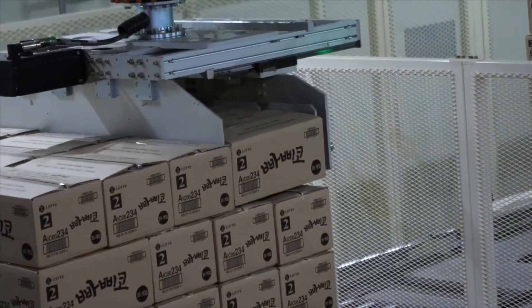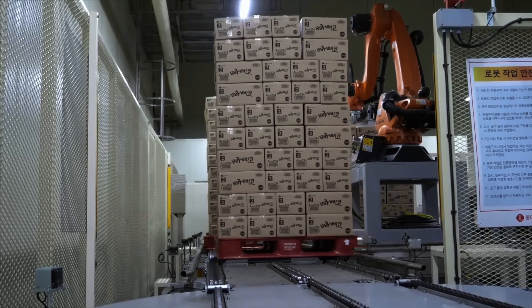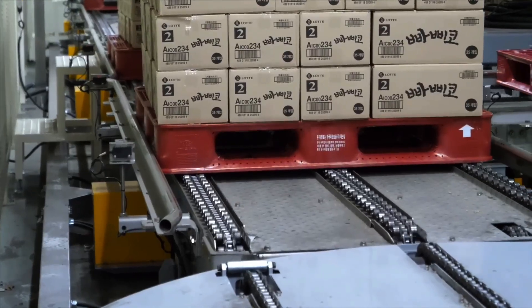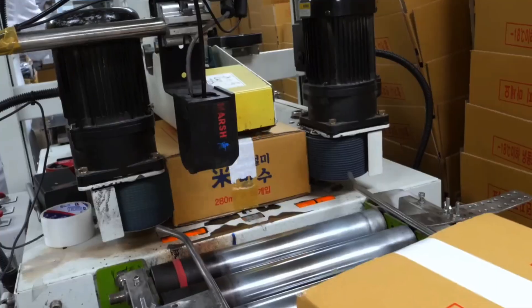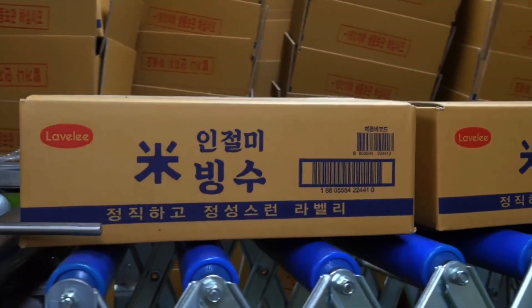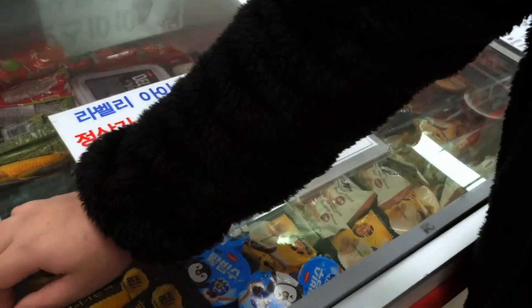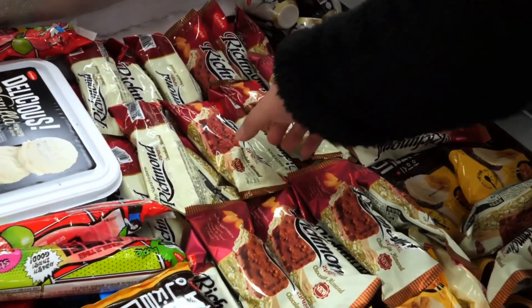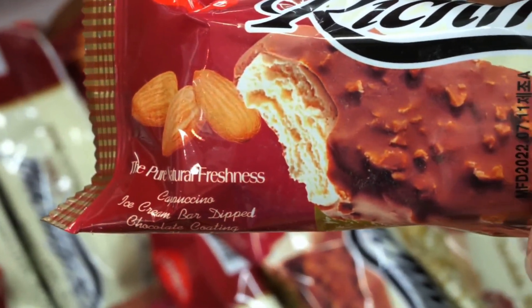It's loaded into refrigerated trucks, specially designed to maintain a consistent low temperature throughout transport. Each vehicle is equipped with GPS and temperature loggers to ensure the cold chain remains unbroken. Most deliveries reach retail stores within 24 to 48 hours. Large factories partner with logistics providers to ensure smooth distribution across regions and countries.